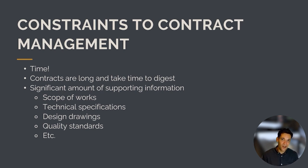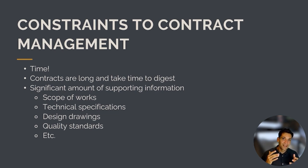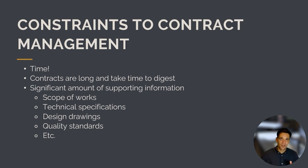Number one is time. Contracts are long, wordy, and complicated. We often have a short period of time to review them, to assess the risk, and identify departures. They take a long time to digest. There's also a significant amount of supporting information — there'll be a scope of works, technical specifications, design drawings, quality standards, and all these other documents that form the contract.